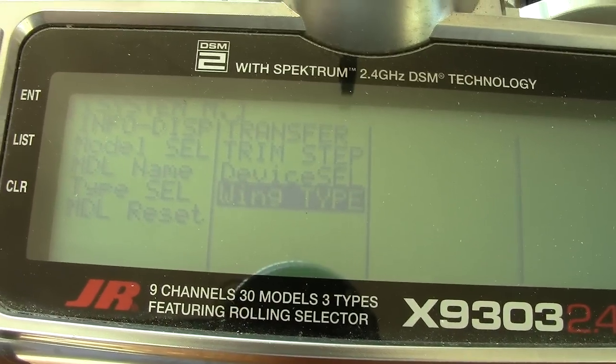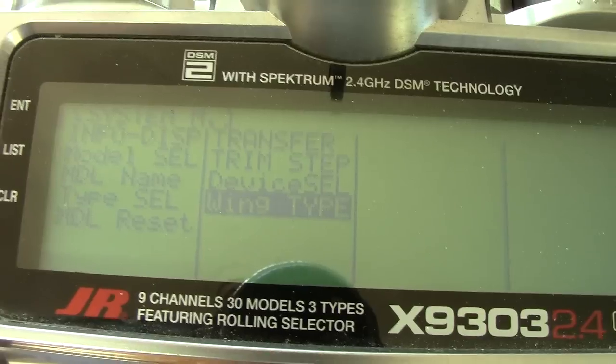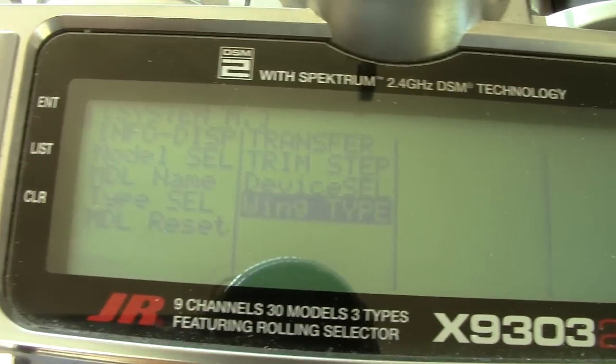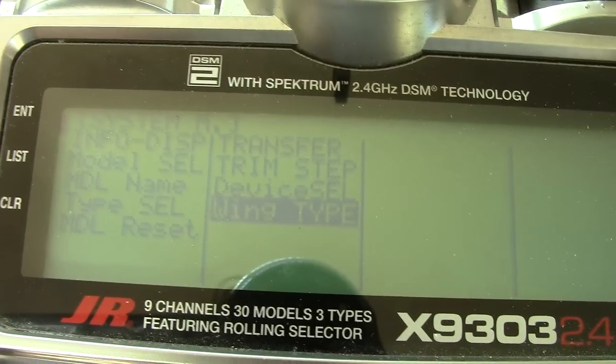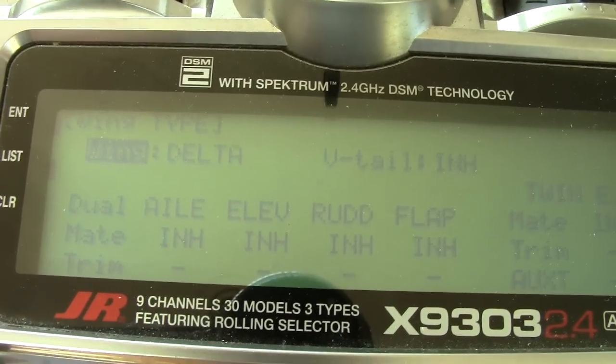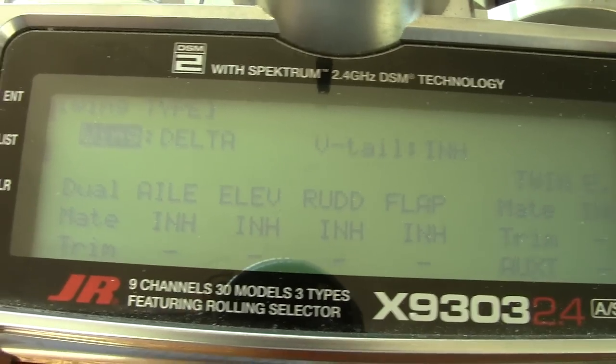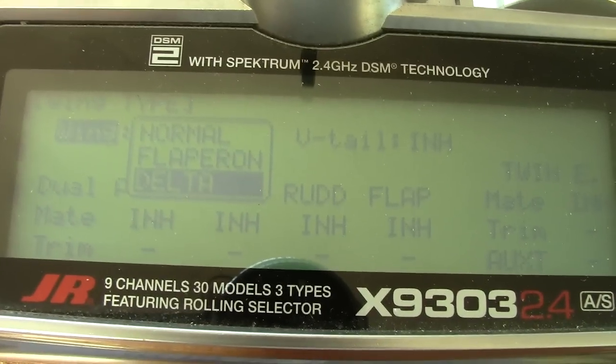This is the main system menu. You need to go into wing type. It's right there. The first option is the type of wing. You click it again and you want to pick delta.